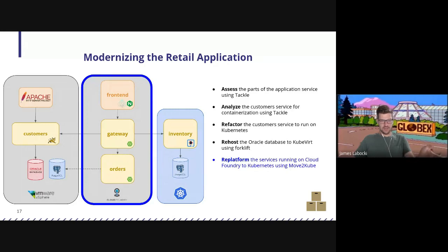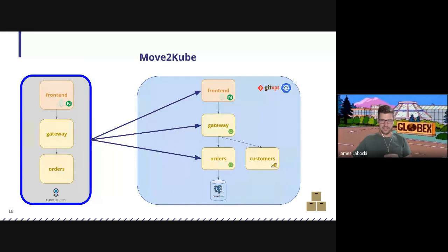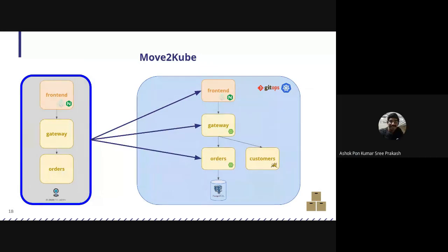Let's talk about my Spring Boot apps running on Cloud Foundry — how am I going to move those over? Absolutely. You have a couple of Spring Boot apps — the gateway service and the order service — and your Node.js application, the front end. Let's look at them and see how we can translate them. Let's have a quick demo of MoveToKube with the UI. Akash, if you can share your screen.